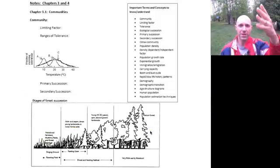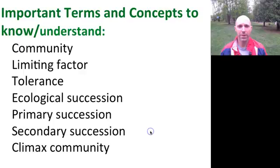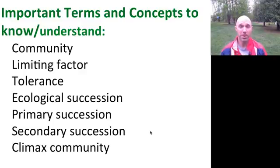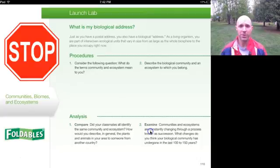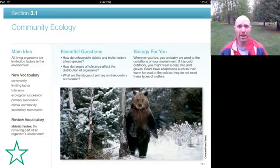Here's the first page covering things we're looking at. The key terms for Section 3.1 are: community, limiting factor, tolerance, succession — both primary and secondary — and climax community. The first launch lab asks: where is my biological address? Go ahead and stop and complete this activity, either from this video or out of your textbook online on the iPad.